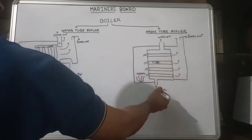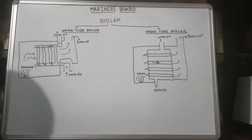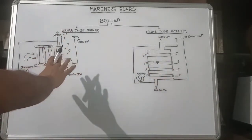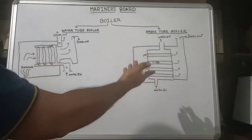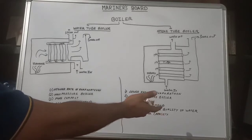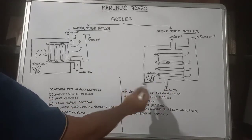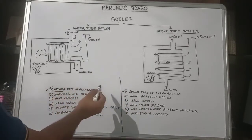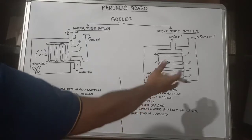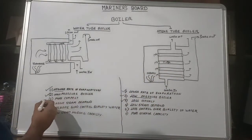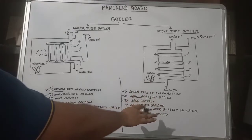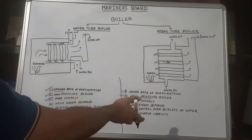A very important question a surveyor may ask is the basic difference between water tube and smoke tube boilers. Here are key differences: the smoke tube boiler has a lower rate of evaporation, whereas the water tube boiler has a higher rate of evaporation. The smoke tube boiler is a low pressure boiler, while the water tube boiler is a high pressure boiler. The smoke tube boiler is less compact in size, whereas the water tube boiler is very compact. The smoke tube boiler is mainly used where steam demand is low, and the water tube boiler is used where steam demand is high.